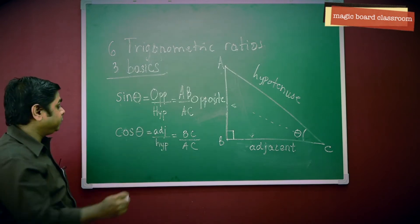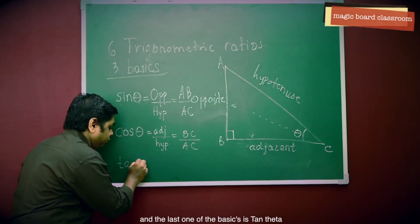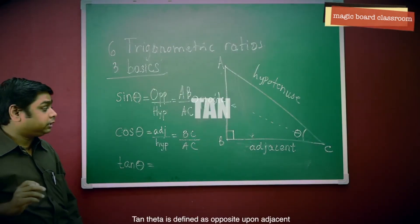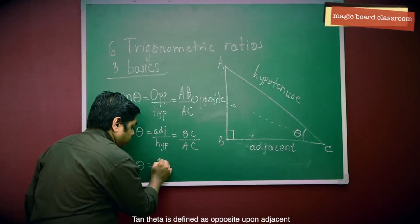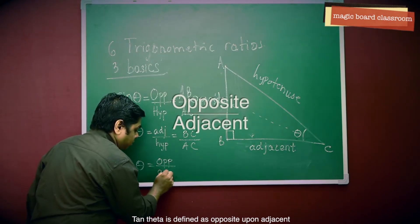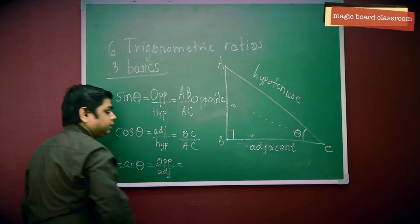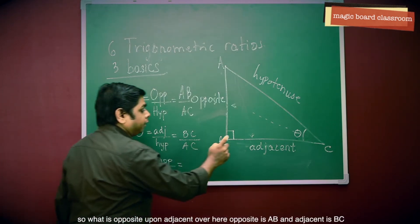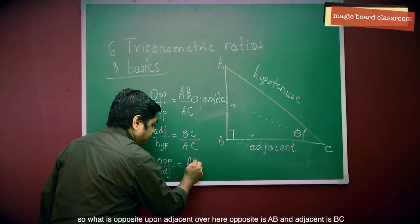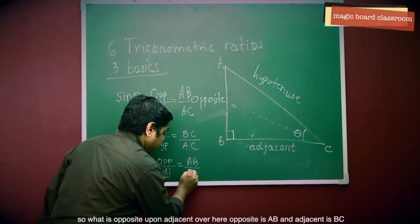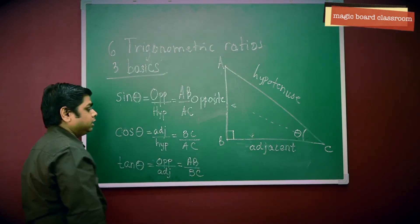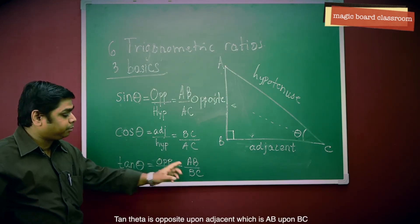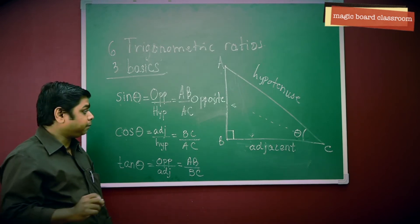The last of the basic ratios is tan theta. Tan theta is defined as opposite upon adjacent. So what is opposite upon adjacent here? Opposite is AB and adjacent is BC. So tan theta is AB upon BC.